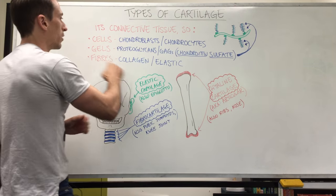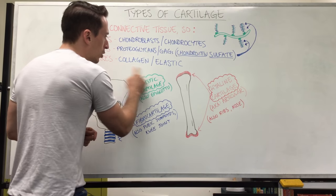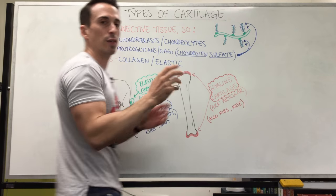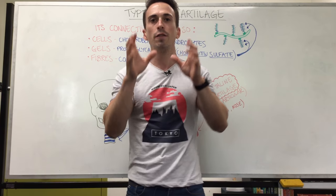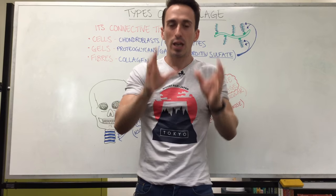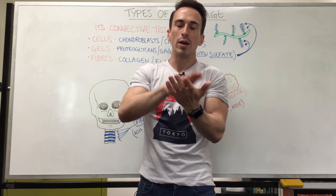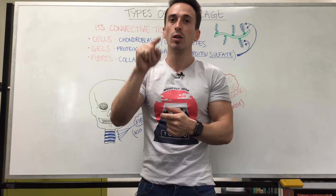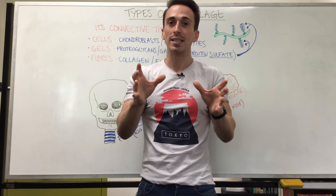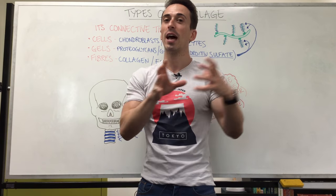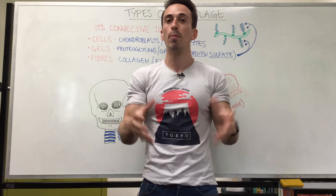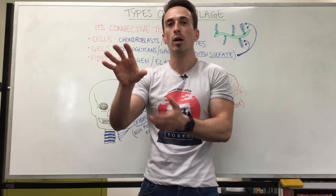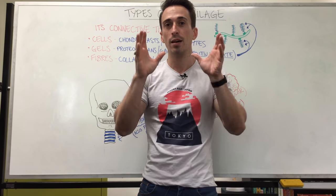The fibers in cartilage are predominantly collagen, though some cartilage contains high amounts of elastic tissue. Cartilage is also the precursor tissue for bone in the fetal organism — fetuses have cartilage instead of a bony skeleton, and in fact newborn babies are predominantly cartilage rather than bone, which then turns into bone through a process covered in another video.